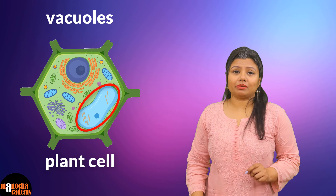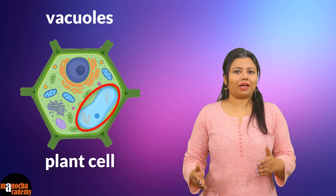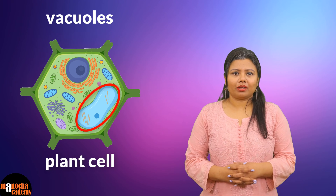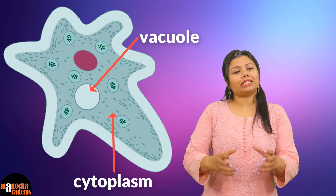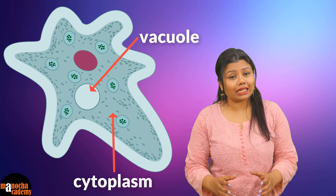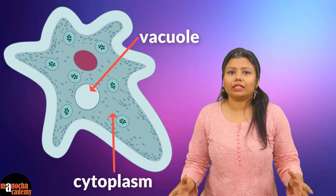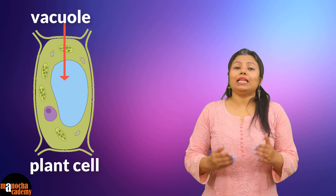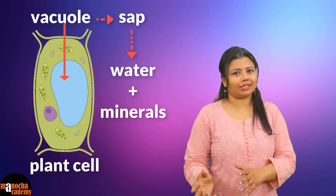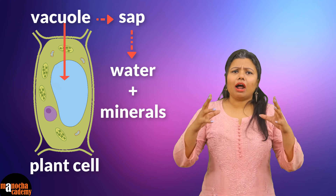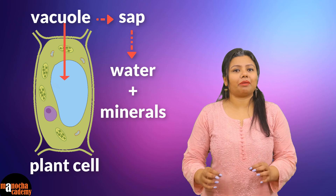Vacuoles are non-cytoplasmic areas present inside the cytoplasm that remain separated from the cytoplasm by a membrane. These are like sacs but they don't contain cytoplasm. They contain several other things — mostly in the case of plants, they contain sap, that is, water and minerals. In a plant cell, we find the largest vacuole occupying the center of the cell, storing water and minerals.